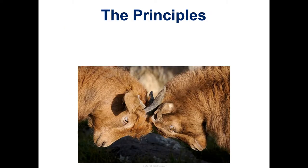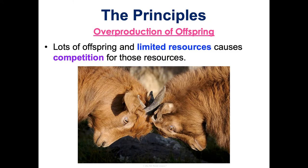First is overproduction of offspring. This connects back to what Malthus said about the struggle for existence — there are way more offspring than there are resources, and thus this creates competition. There is this struggle for existence that makes some organisms come out as better and others as worse. There can't be natural selection choosing the more fit if there isn't a better and worse in a competition to demonstrate that.